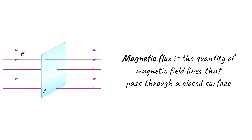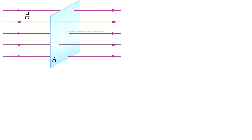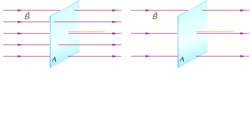Magnetic flux can be defined as the quantity of magnetic field lines that pass through a closed surface. Now let's list the conditions that change the magnitude of the magnetic flux. As an analogy with the motion of particles, magnetic flux changes with the density of the magnetic field lines. If the density of the magnetic field lines decreases, as shown in the illustration, then the flux through the surface will also decrease.